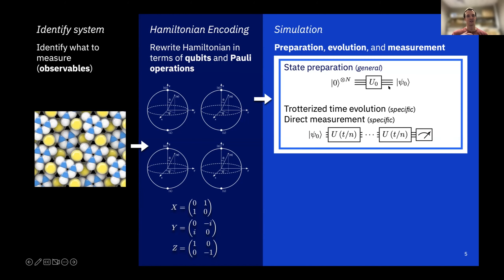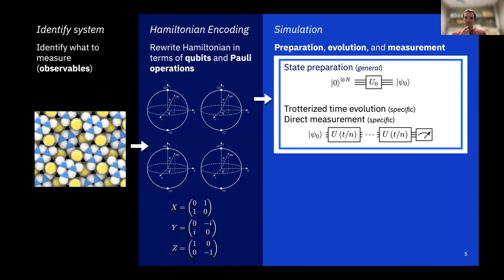Within simulation there are three main components. One is state preparation, which can vary from trivial to quite complicated. Then there's the actual time evolution — here I've listed trotterized time evolution, which is a specific technique, but there are other ways to time-evolve states. At the end we want to measure our observable. Here I've written direct measurement to mean measuring in the Z basis and using that data, but sometimes we might want some sort of correlation or a different basis.